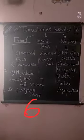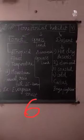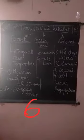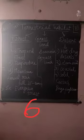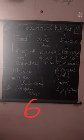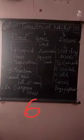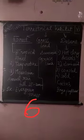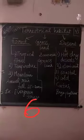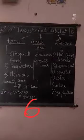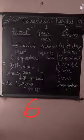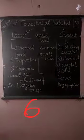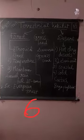That land — it may be forest, grass, or desert, whatever it may be — it comes under terrestrial habitat. Terrestrial habitat also includes man-made habitats like farms, towns, and cities. These all come under terrestrial habitat. The terrestrial habitat makes up about 28% of the entire world's habitat.